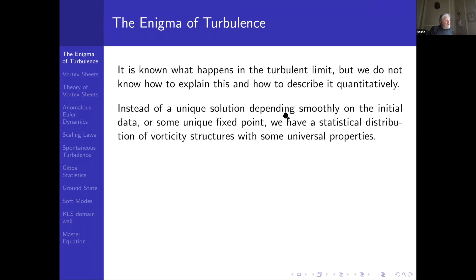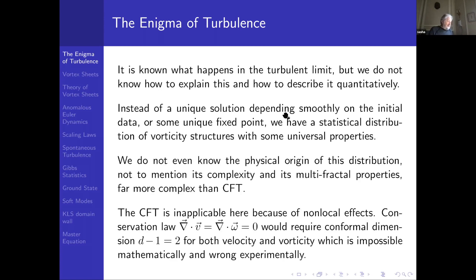Instead of a unique solution depending smoothly on initial data, or some unique fixed point, we have a statistical distribution of artistic structures with some universal properties. So to say, instead of a fixed point, we have a fixed manifold. We have to explain how we get there and what is the distribution over this manifold. We don't even know the physical origin of this distribution, not to mention its complexity and its multifractal properties, far more complex than conformal field theory.